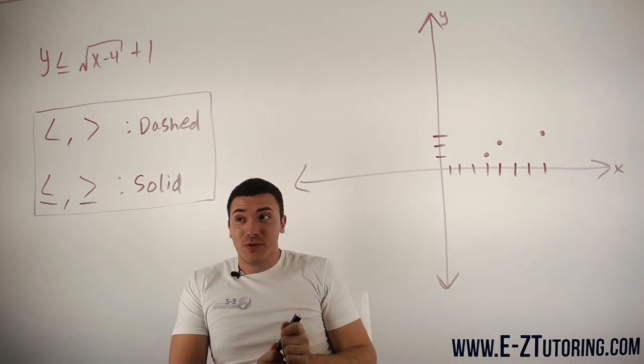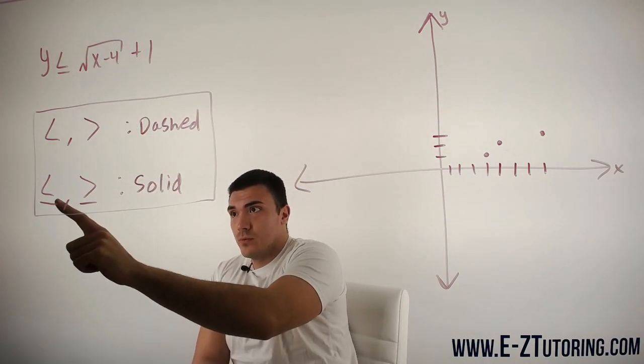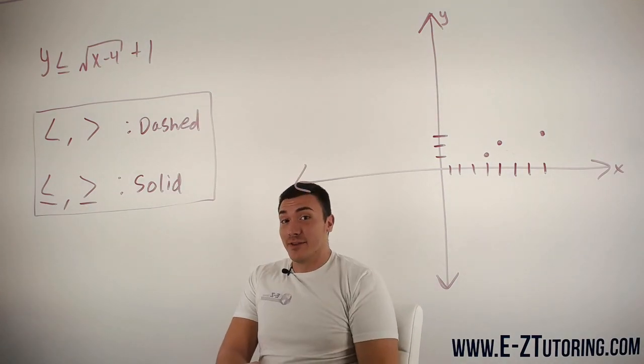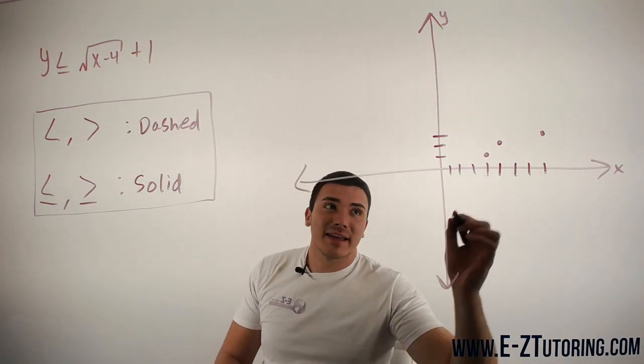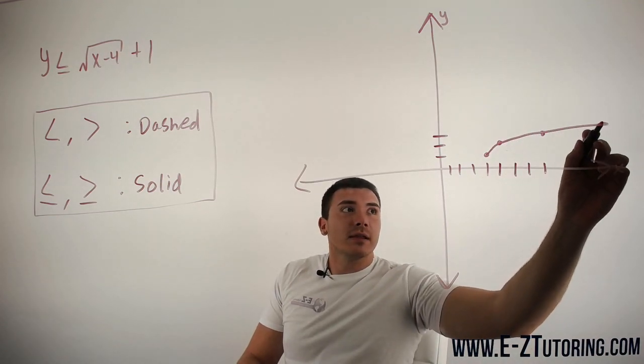That is very important. Now we can look at our sign. Our sign is less than or equal to, which is this one, which means we are going to have a solid line. Now we can go ahead and connect the dots. We will connect them and we will get something like that.